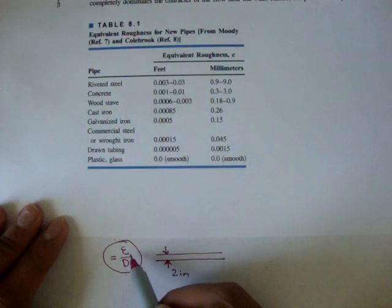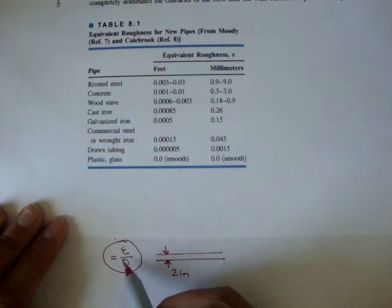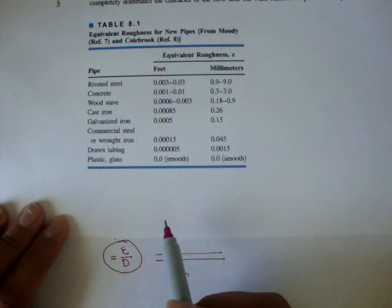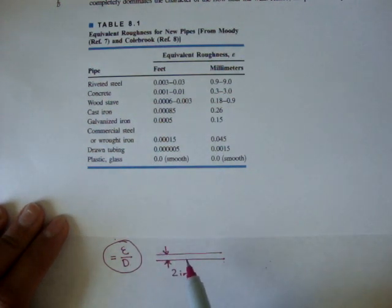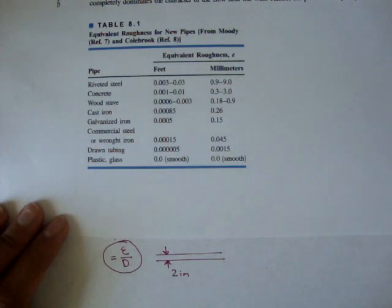Whenever we need to find the relative roughness of a pipe, which we use to figure out the frictional factor in the Moody chart, which I'll discuss in the next video, we use this table.